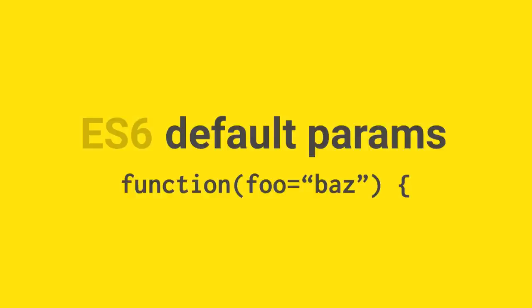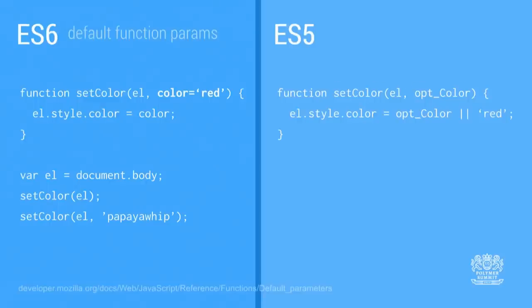Default params — proper default parameters finally in function definitions. The ES5 equivalent: if you had a set-color method that takes a DOM node as the first parameter and an optional second parameter, you would have to check inside the code whether it exists or is undefined. Instead, in ES6, this becomes a lot easier — we can define that second parameter, color, to be red by default. So if the user doesn't pass it or passes undefined, the DOM node will be set to that default. It's a really sweet little feature.